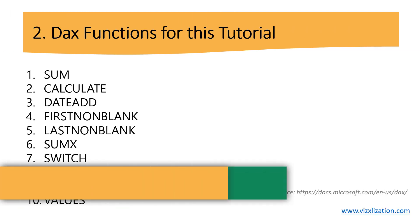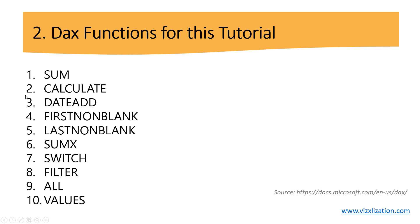The next point covers the DAX functions we're going to use for this tutorial. Highly recommended — if you're not familiar with these functions, please stop the video and check the Microsoft DAX functions source. SUM is an aggregation function, CALCULATE is one of the most powerful functions in Power BI, DATEADD is critical to find a previous period calculation, and we also have FIRSTNONBLANK and LASTNONBLANK. FIRSTNONBLANK returns the first value in the column for which the expression has a non-blank value, and LASTNONBLANK returns the last value filtered by current context where the expression is not blank.